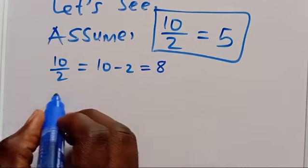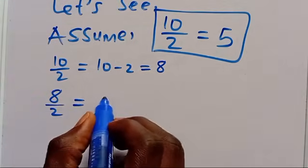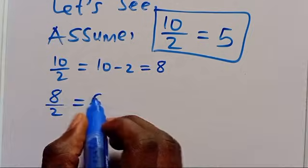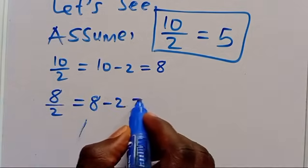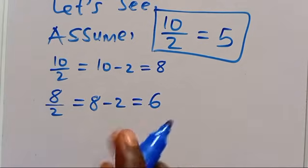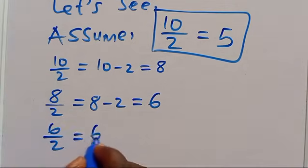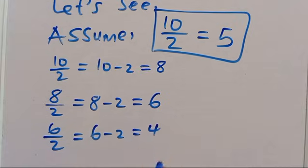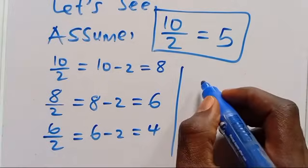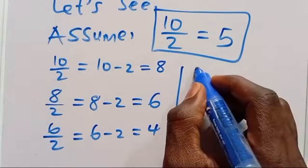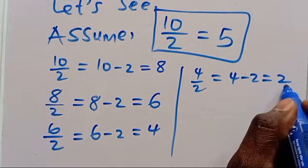Let's pick this 8. We have 8 divided by 2, which is 8 minus 2, giving us 6. Let's also pick 6: 6 divided by 2, because 6 minus 2, gives us 4. When we also pick 4 divided by 2, this is 4 minus 2, giving us 0.